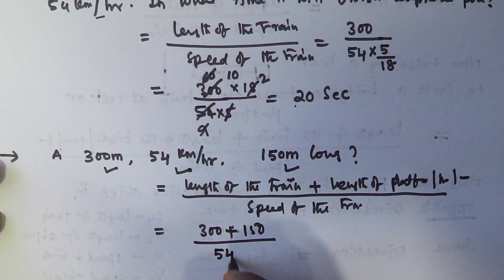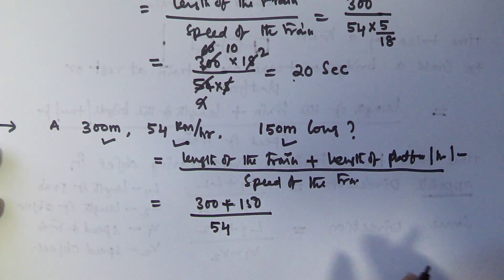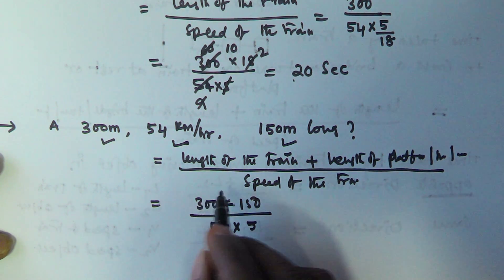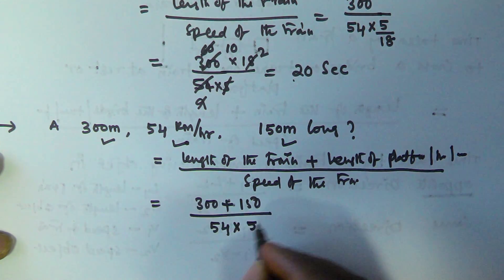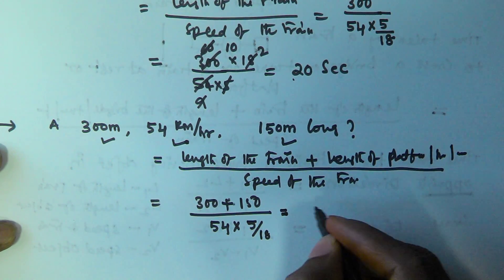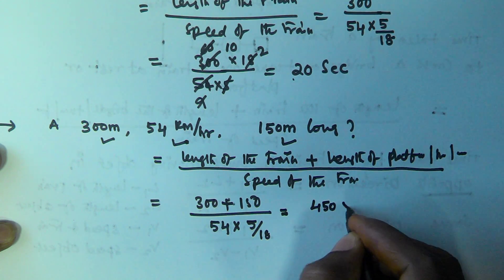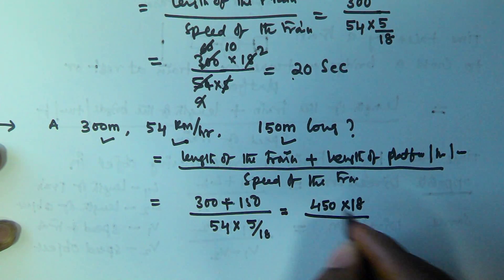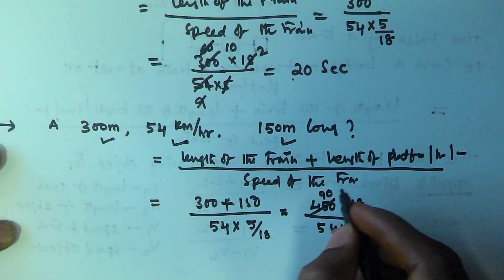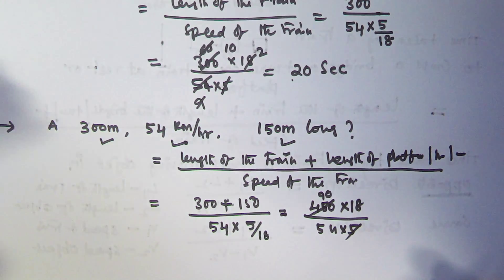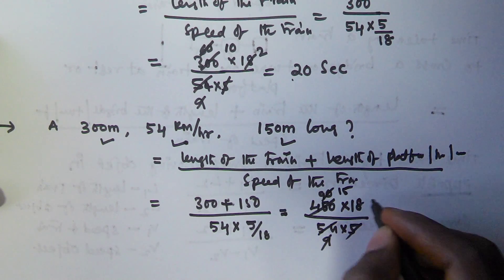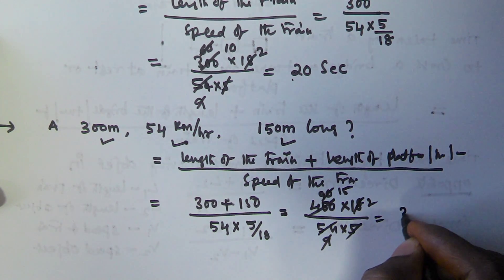The speed is 54 km/h, which we convert to meters per second by multiplying by 5/18. So the calculation is (300 + 150) × 18 divided by (54 × 5), which gives 450 × 18 / 270, equaling 30 seconds.